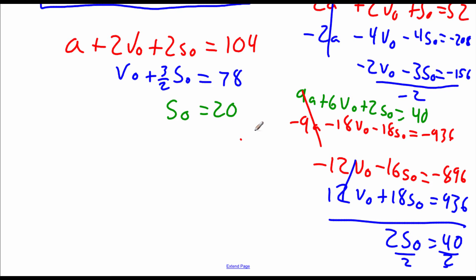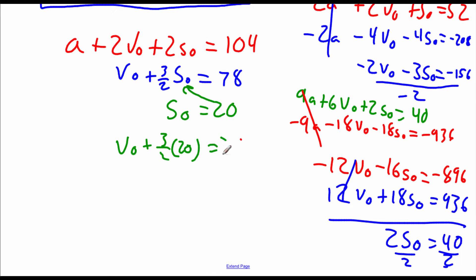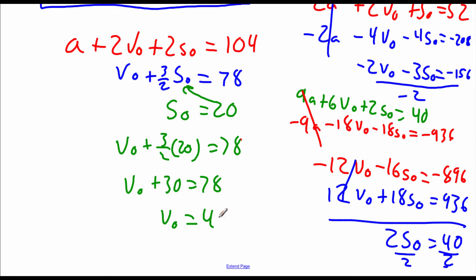Now we can back substitute to find our missing values. Plugging 20 into the equation right above it: v-sub-0 plus three-halves times 20 equals 78. Taking three-halves times 20 gives v-sub-0 plus 30 equals 78. Subtracting 30, we get v-sub-0 equals 48.